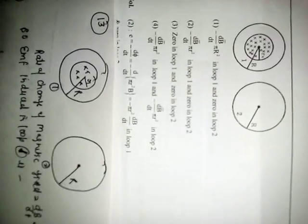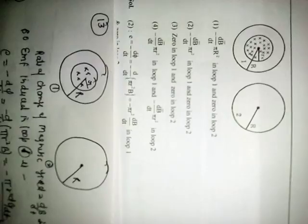So EMF induced in loop 1 is equal to minus d phi over dt, minus d over dt pi R squared B, which is equal to minus pi R squared dB over dt in loop 1.